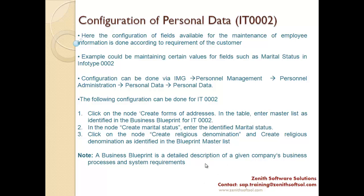The configuration of fields available for employee information maintenance is done according to customer requirements. For example, the customer might say: for marital status we just need 'Single' and 'Married' — we don't need 'Divorce.' So you configure based on the company's requirement. Here I've shown the steps on how to configure info type 2.